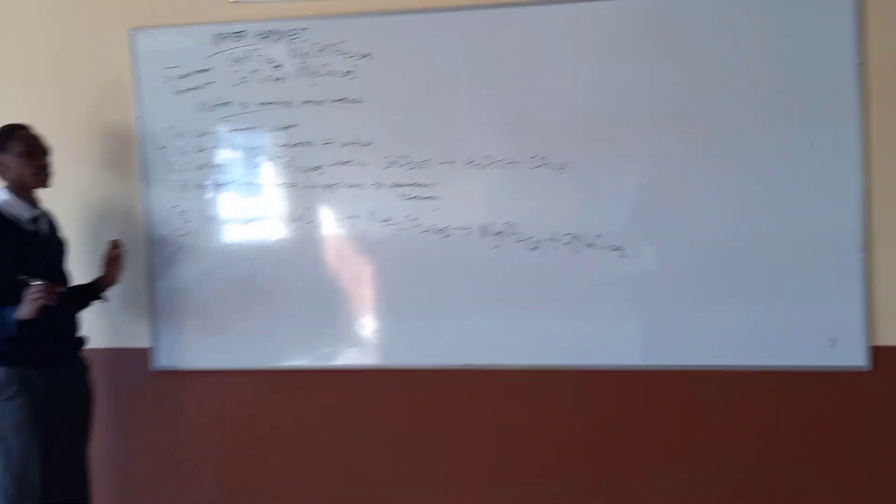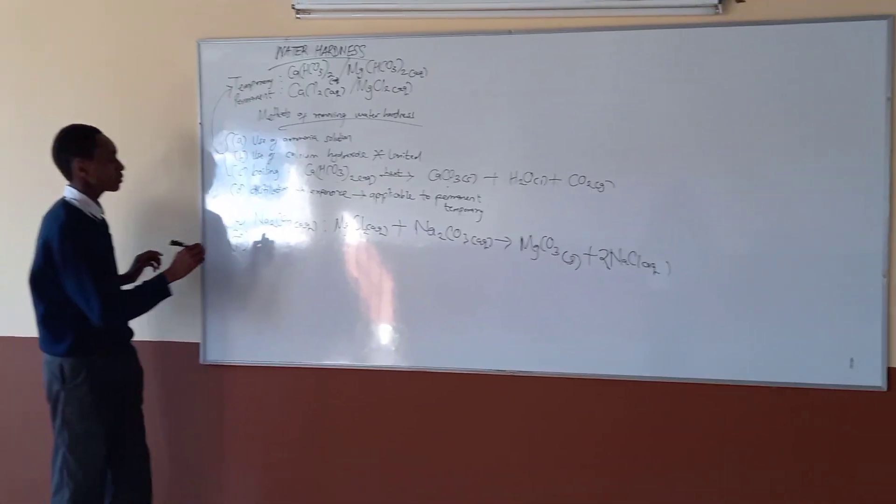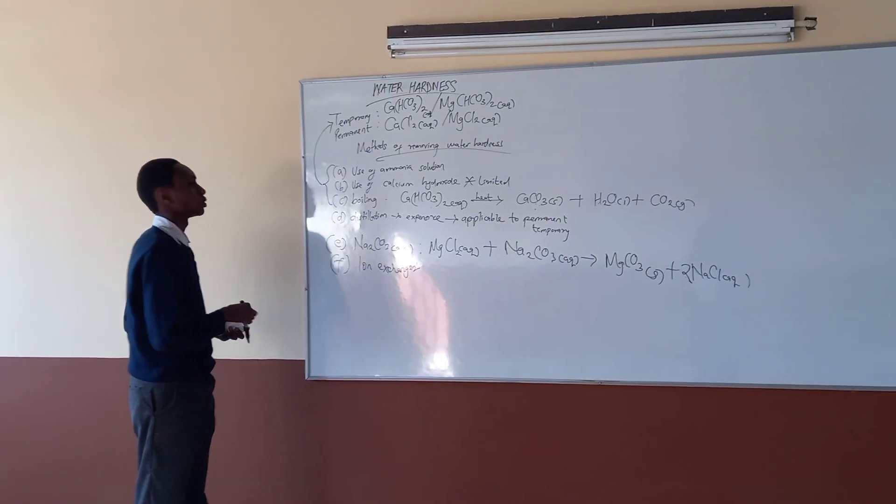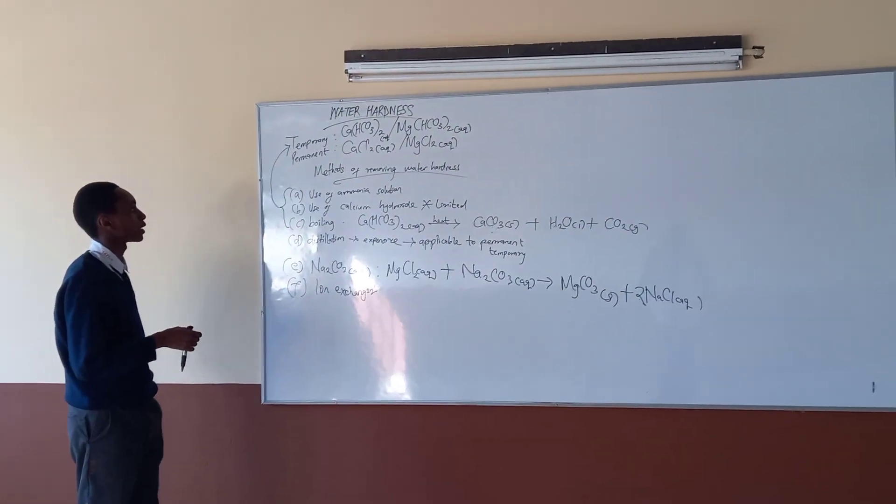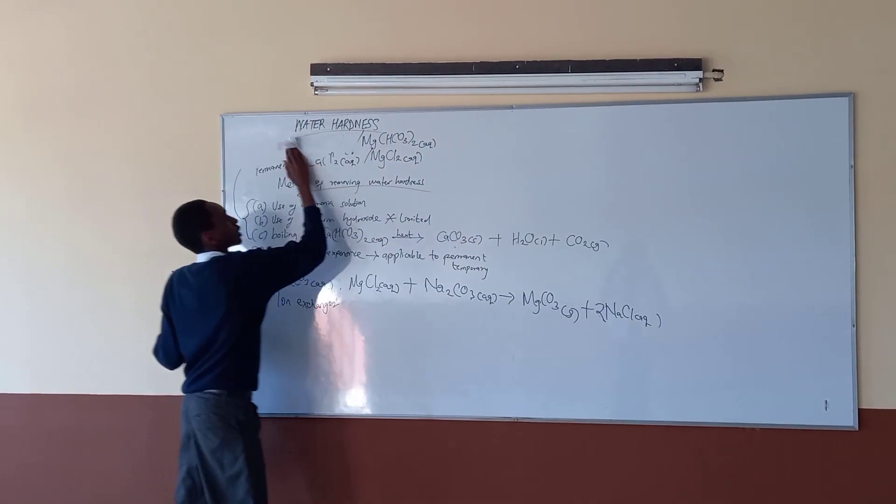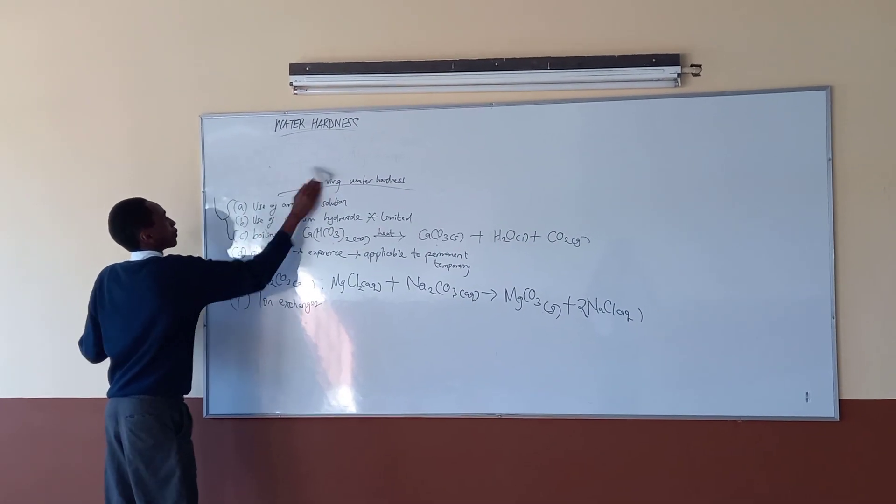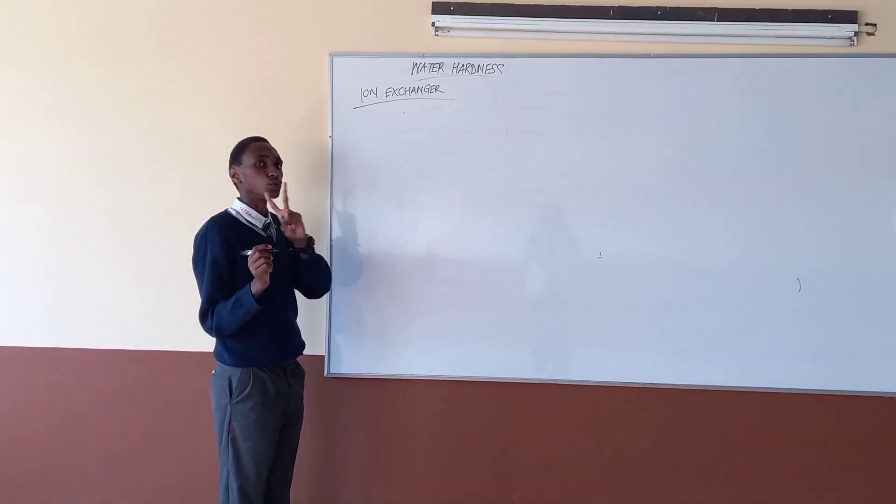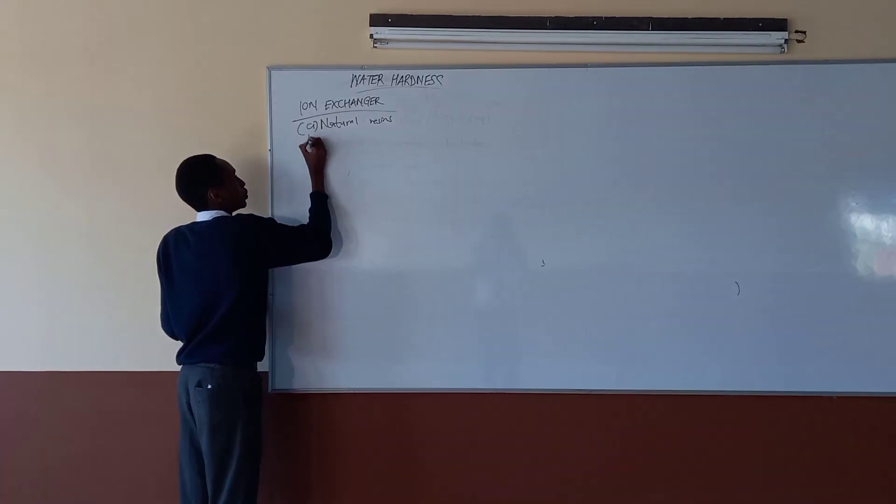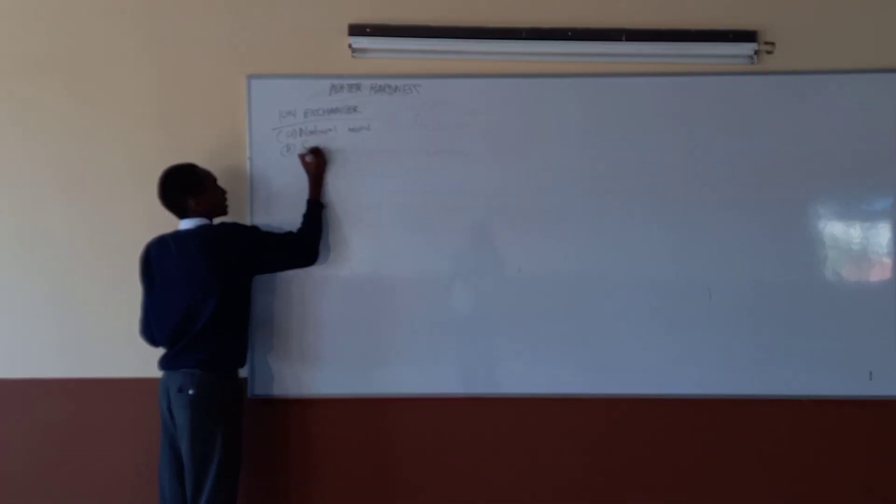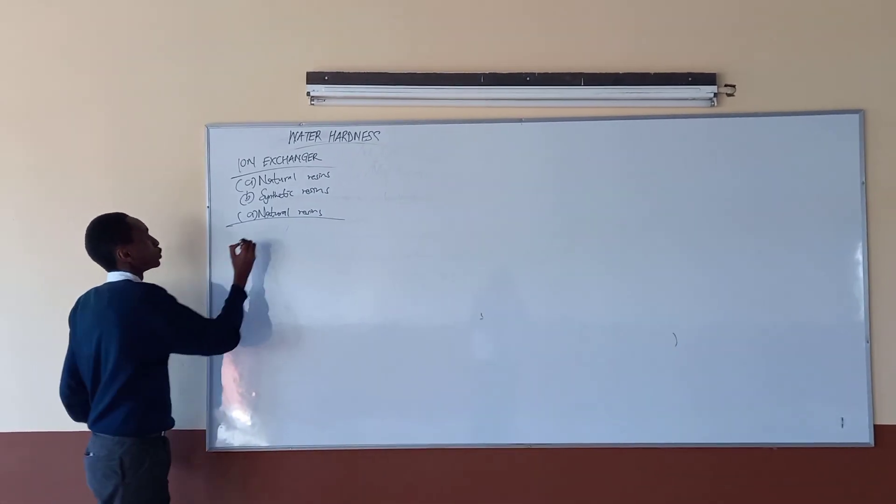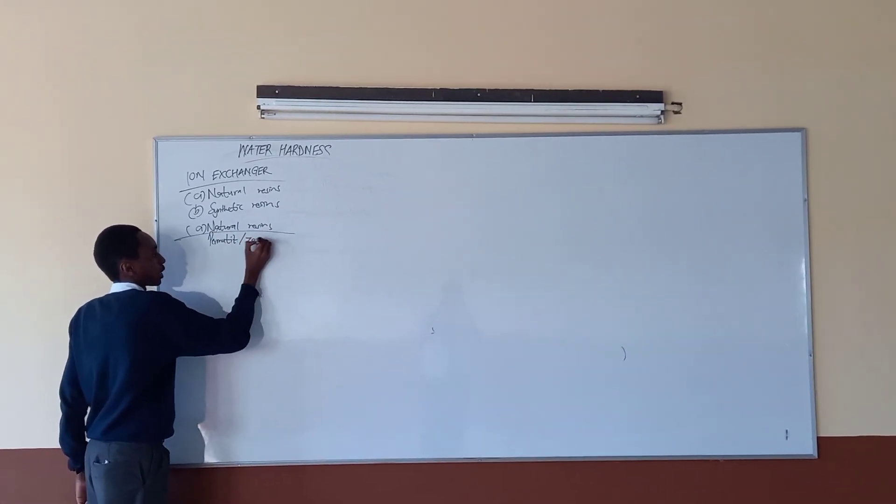What I would like to put emphasis on is the ion exchanger. This is very essential, because a question was set in 2020 where most students do not get to pass. Unfortunately, it was set in 2022. There's use of natural resins and use of synthetic resins. Natural resins is where we get to use permutit, also called zeolite.